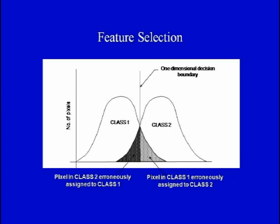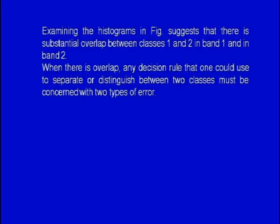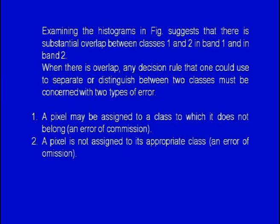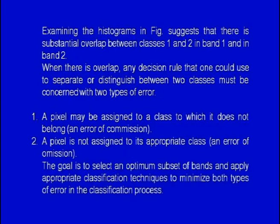Examining the histograms, there is a substantial overlap between classes 1 and 2 in band 1. When there is overlap, any decision rule used to distinguish between two classes must be concerned with two types of error: first, a pixel may be assigned to a class to which it does not belong — an error of commission; second, a pixel is not assigned to its appropriate class — an error of omission. The goal is to select an optimum subset of bands to minimize both types of errors.